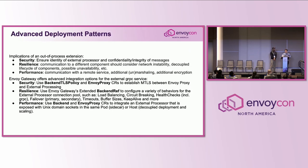Using an out-of-process extension creates new considerations and challenges. For security, we now have to authenticate the external extension and ensure data is transmitted confidentially. For resilience, there's now a network between Envoy and the external extension, so instability can occur due to network hiccups. This extension has a decoupled lifecycle from Envoy, so it may be unavailable at some point. And notably for performance, if previously the extension would run in-process, now we have an out-of-process extension with network communication adding additional latency, plus marshalling/unmarshalling overhead and encryption.